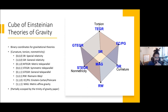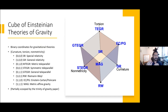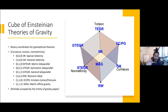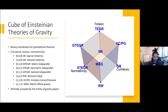Since general relativity only has curvature, you put it at a vertex like (1,0,0), where the zeros represent no torsion and no non-metricity. The trinity of gravity is basically a triangle corresponding to the different axes of this cube. There's also the general teleparallel theory combining both torsion and non-metricity, the Einstein-Cartan geometry with curvature and torsion, and Riemann-Weyl geometry combining Riemannian curvature with non-metricity. Metric affine gravity is at the other end from special relativity, having all three. This cube is just a first approximation for diving into the full scope of possible theories.